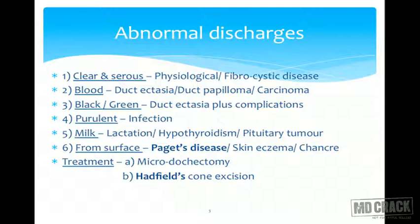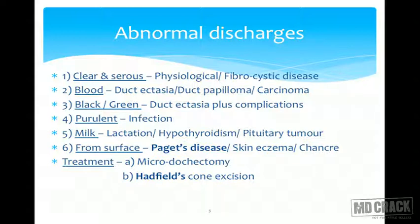Breast is an important anatomical as well as physiological unit of the human body. Various physiological changes — as a girl attends menarche, passes through various phases of menstruation and childbirth — will produce various manifestations. Clear or slightly serous discharge is seen sometimes in physiological changes or sometimes in fibrocystic disease. The most common discharge is, of course, milk — which is not a discharge per se but a physiological secretion occurring during the phase of lactation.